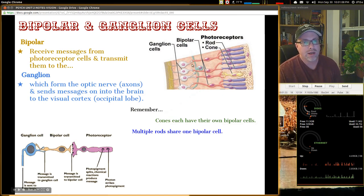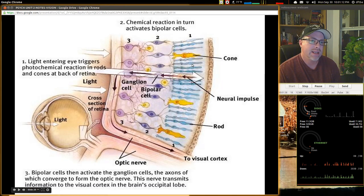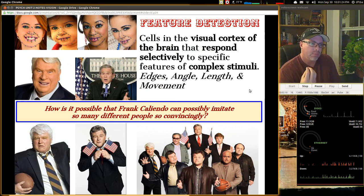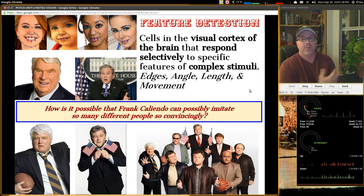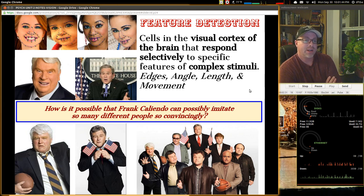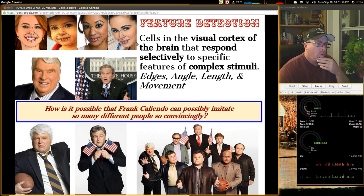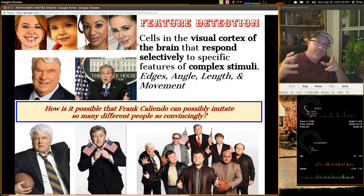Now, what we need to look at here next is this idea of feature detection. As we said initially here, we're bringing in the senses, but then the brain is working with prior knowledge, information, and some of this is believed to be hardwired in the human condition, in the human brain, to be able to make sense of the world. And so there are cells and neurons in the brain that are in the visual cortex that respond selectively to specific features of complex stimuli. Things like edges, and you see the edges here, edges of their faces. Things like edges, angles, lengths, and movements, where you can see someone's form from across the room. You don't even see their face, but you see how they're moving, and you know who that is.